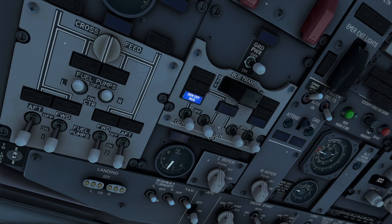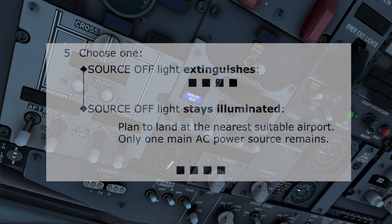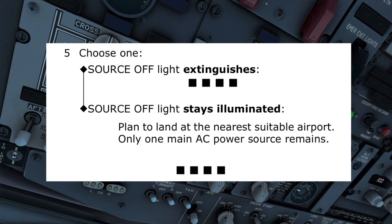The checklist now has us go to step five. Step five depends on whether the source light is extinguished or not. It has extinguished, so option one is correct. The four black boxes underneath let us know we have finished the procedure. If the source light was still illuminated, we would be directed to land at the nearest suitable airport.